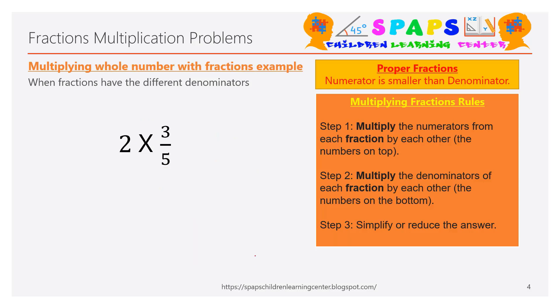Let's move on to multiplying a whole number with a fraction. In this equation: two multiply by three by five, the fraction is three by five and the whole number is two. If you are confused, you can write two as two by one, since any number divided by one gives the same number. This converts the whole number into a fraction.